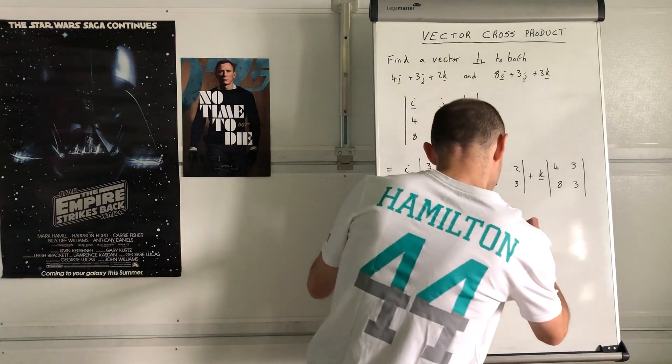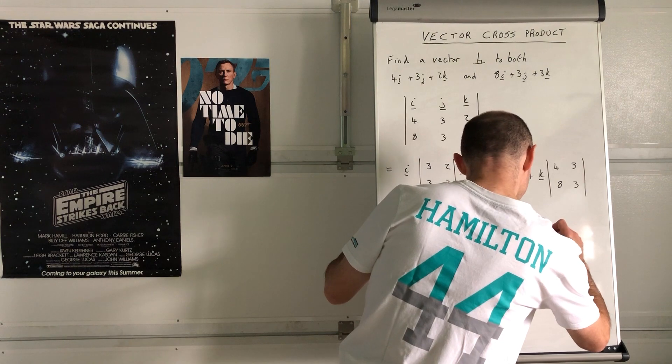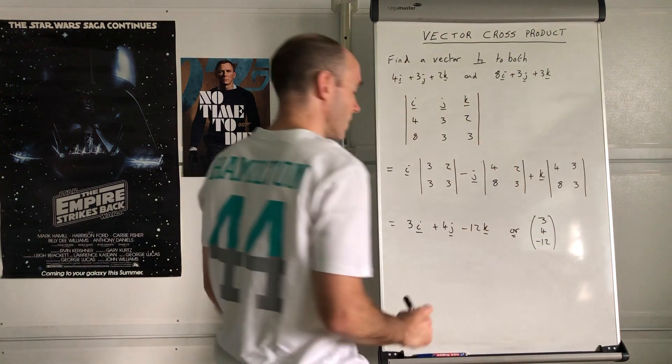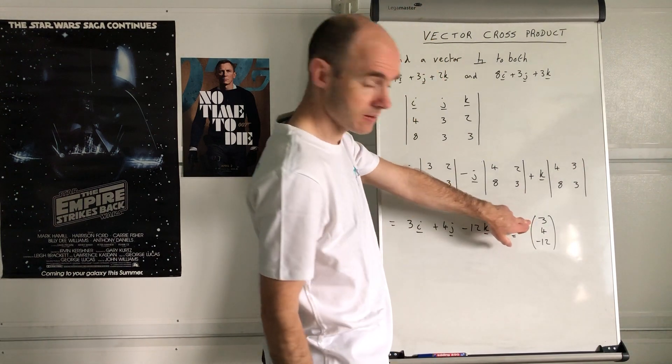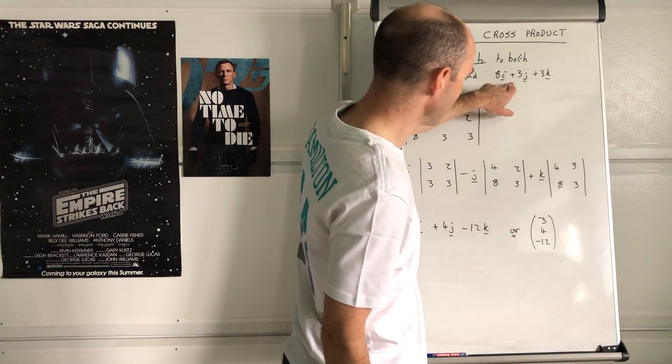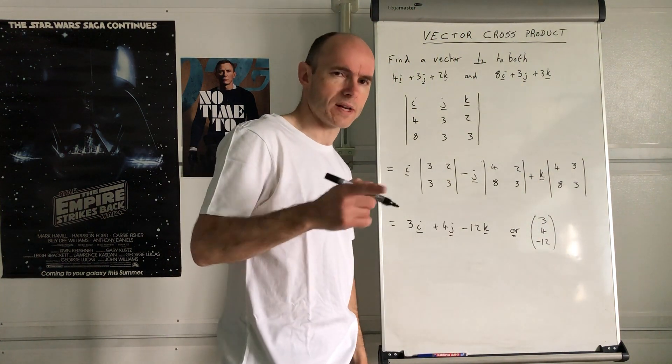I just prefer to write it as 3, 4, negative 12 like that. So that vector there is perpendicular to both that vector there and that vector there, which is quite handy. We'll test that in a minute.